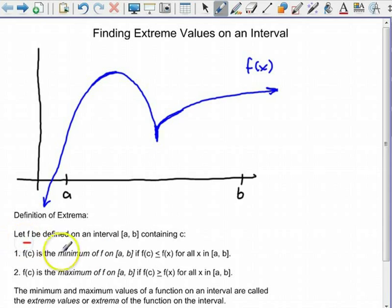We've got a function f, and it's going to be defined on an interval from a to b. So here's my a coordinate on my x-axis, and here's my b coordinate. So we say that f(c) is the minimum of f on the interval from a to b, and notice it's a closed interval, if the y value when x equals c is less than or equal to any y value for all x in a to b.